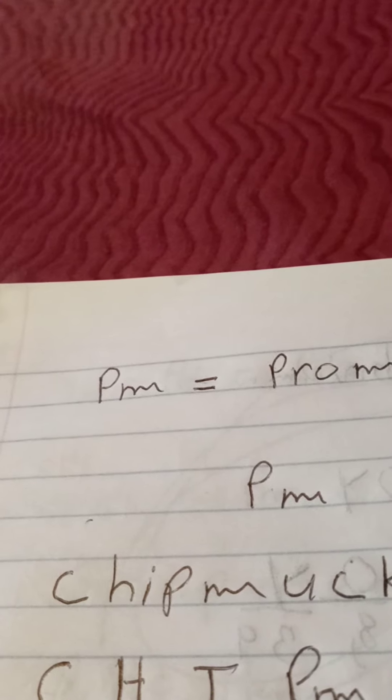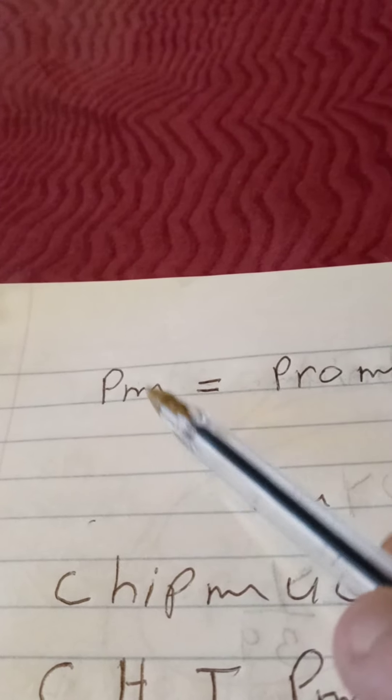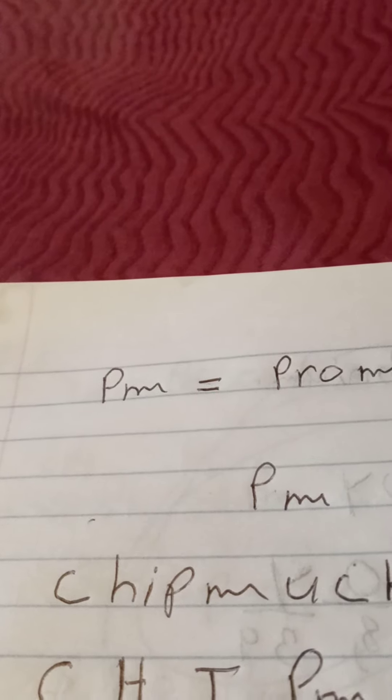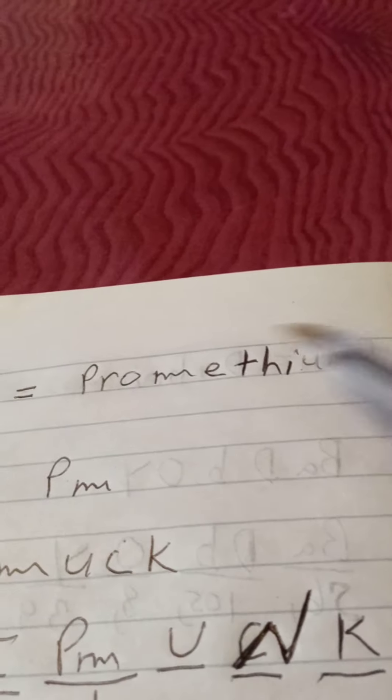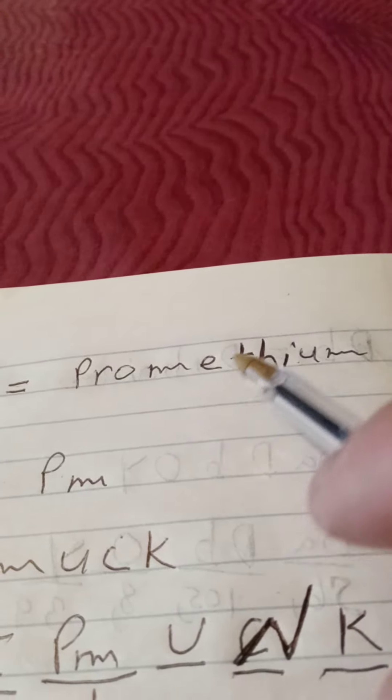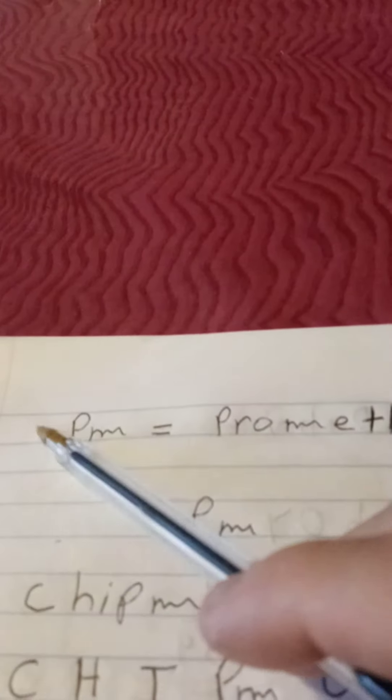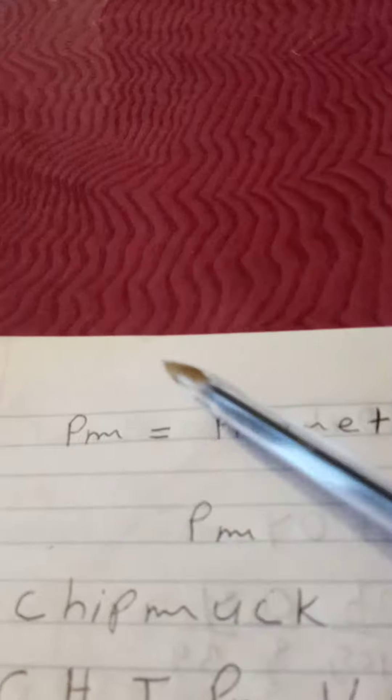This is very important if you are studying chemistry and looking for PM as a chemical symbol for promethium: P-R-O-M-E-T-H-I-U-M. When the P comes before the M, you got the word chipmunk.